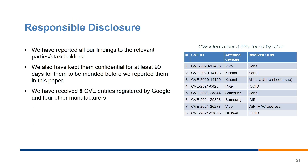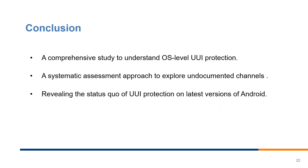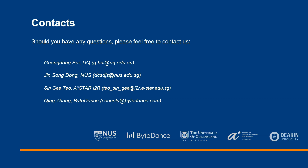Regarding responsible disclosure, we reported all findings to the relevant parties and stakeholders, keeping them confidential for at least 90 days before reporting in academic research. We have received eight CVEs from Google and four other manufacturers. In summary, this paper conducts a comprehensive study of OS-level UUI protection, designing and implementing a systematic assessment approach to explore undocumented channels at large scale, successfully revealing the status quo of UUI protection on the latest Android devices in the post-GDPR era.